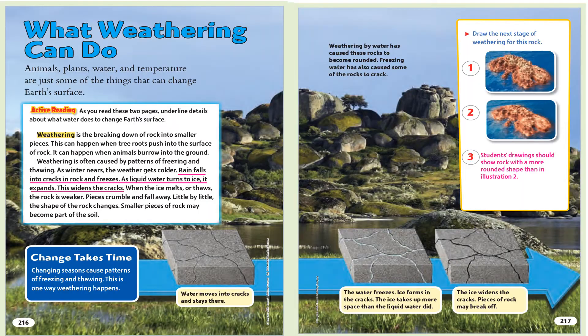What weathering can do. Animals, plants, water, and temperature are just some of the things that can change Earth's surface. Active reading: as you read these two pages, underline details about what water does to change Earth's surface.